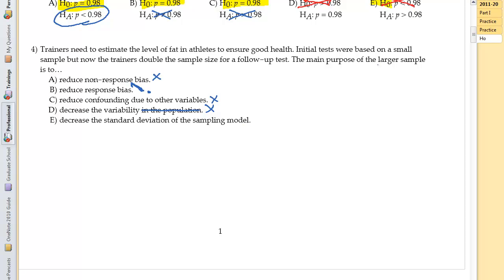To decrease the standard deviation of the sampling model. Ah! This is what happens. When you get a larger sample you decrease the standard deviation of the sampling model. Not of the population but of the sampling model. And so we have to say E here. Alright, now this brings us to the end of the page and that makes us happy. And so stay tuned for part 2.